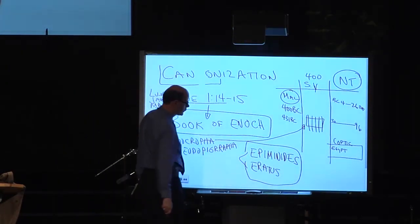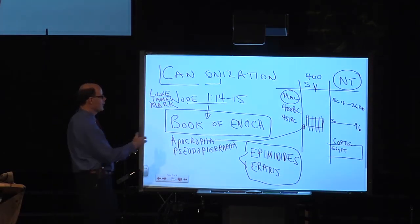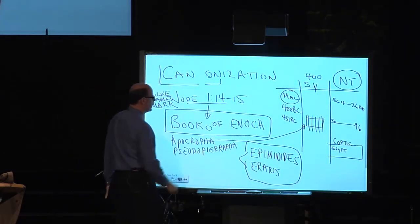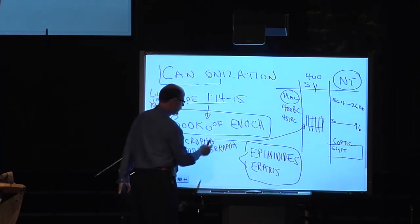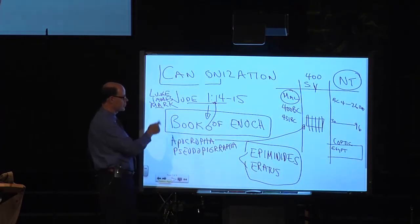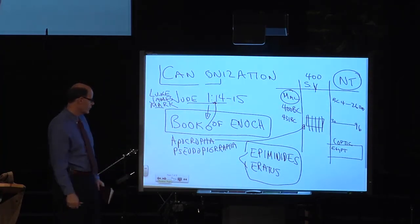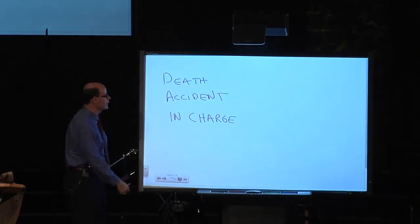But when we talk about Jude citing the book of Enoch, it's no different than Paul citing other sources. It is just them picking a piece of truth out of something that's not inspired and including it into their writing as Jude did and as Paul did in Acts 17.